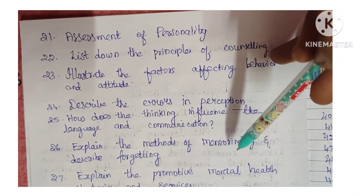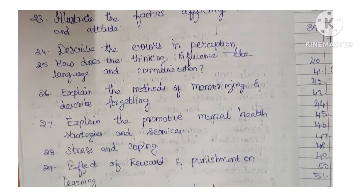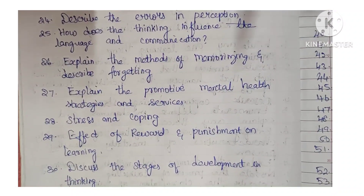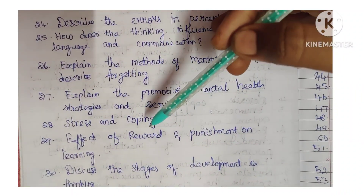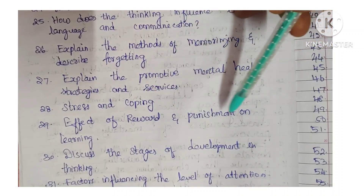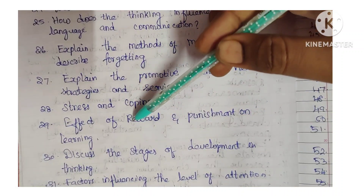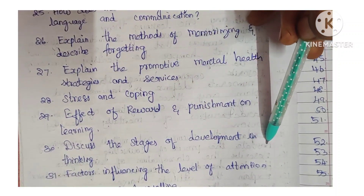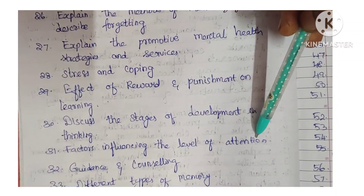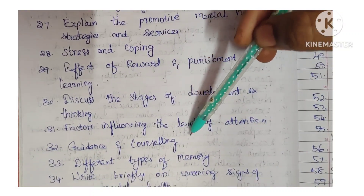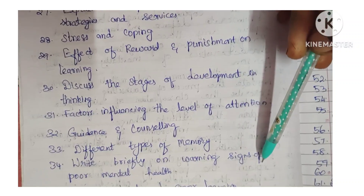Next: explain the methods of memorizing and describe forgetting. Next: explain the promotive mental health strategies and services. Next: stress and coping. Next: effect of reward and punishment on learning. Next: discuss the stages of development in thinking. Next: factors influencing the level of attention. Next: guidance and counseling. Next: different types of memory.